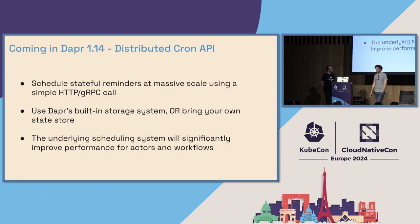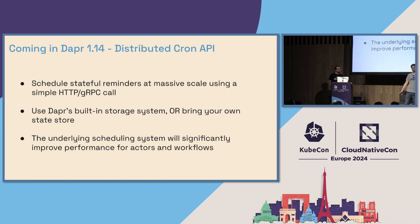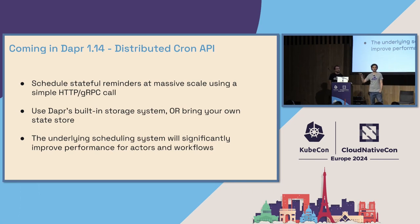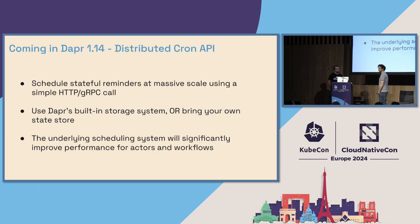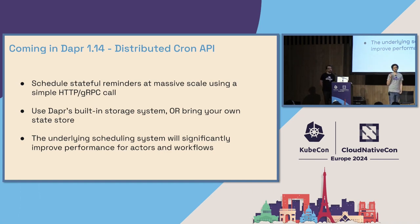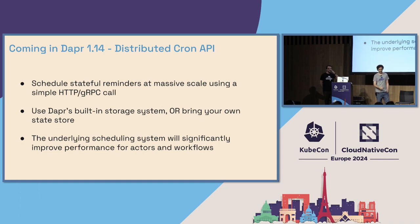With this new scheduler service in 1.14, we're also introducing a distributed cron API. Workflows are great and Actors are very powerful, but sometimes you just need a very high-throughput cron API without writing workflow code or dealing with activities. You just want to tell something: I have this piece of data and want to be reminded at some point, and if my application crashes, I still want it to arrive at my endpoint when it comes back up. The cron API is coming — you issue a simple HTTP or gRPC call, we schedule it, save your state. This is coming in Dapr 1.14, releasing around June-ish. No promises.